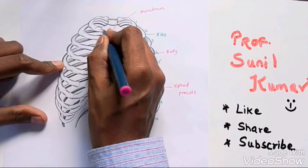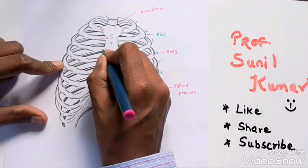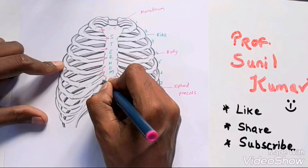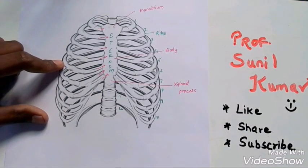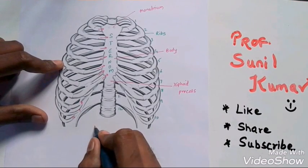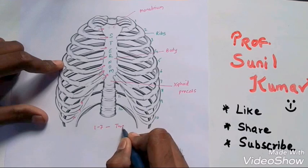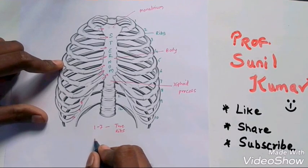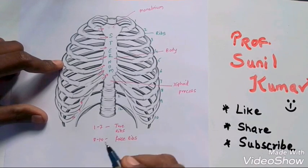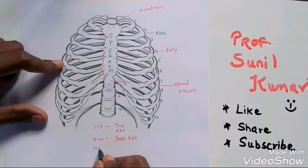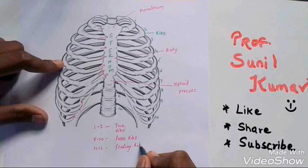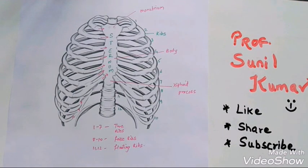When you look at the ribs, look very carefully. The first through seventh are attached to the sternum. But look at 8, 9, and 10, they are not directly attached to the sternum. Therefore, 1 to 7 are called true ribs because they're directly attached to sternum. 8 to 10 are called false ribs because they're not attached or indirectly attached to the sternum. 11 and 12 are called floating ribs because they are not attached to the sternum at all.